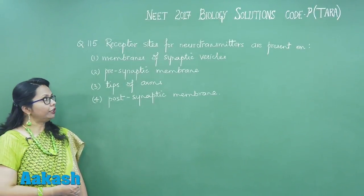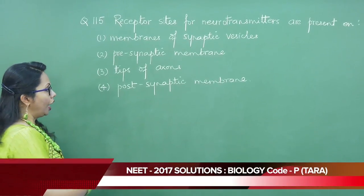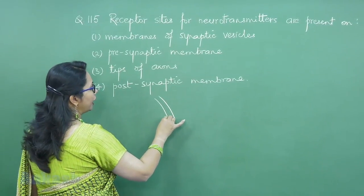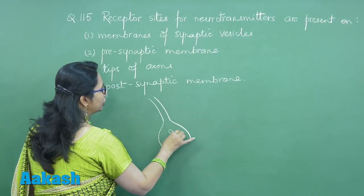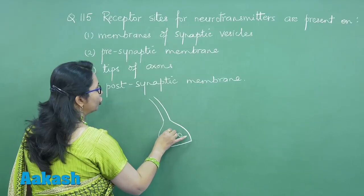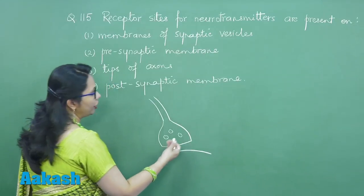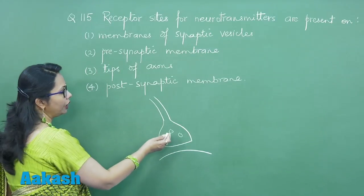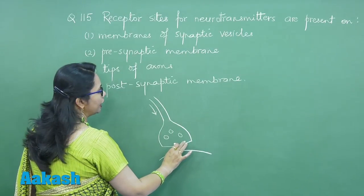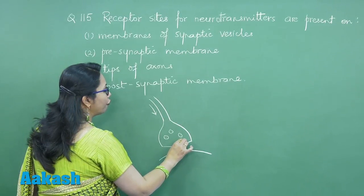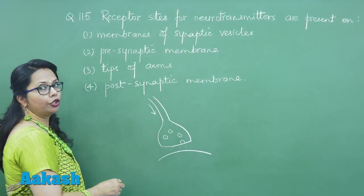Question number 115: the receptor sites for neurotransmitters are present on? In any chemical synapse, the axon ending forms synaptic knobs and the neurotransmitter is present within this synaptic knob, enclosed in synaptic vesicles. There is a post-synaptic membrane with which the cell is communicating. When the impulse reaches here, these synaptic vesicles fuse with the pre-synaptic membrane and by exocytosis they release the neurotransmitter.